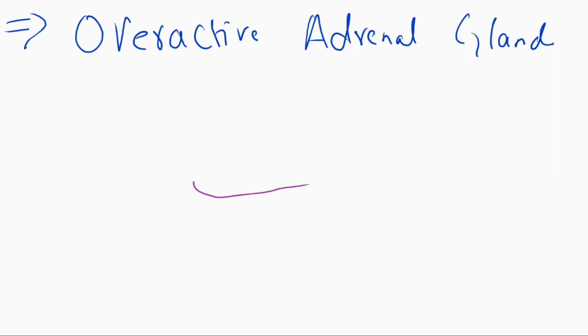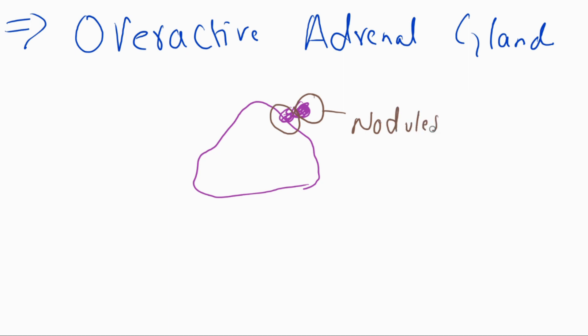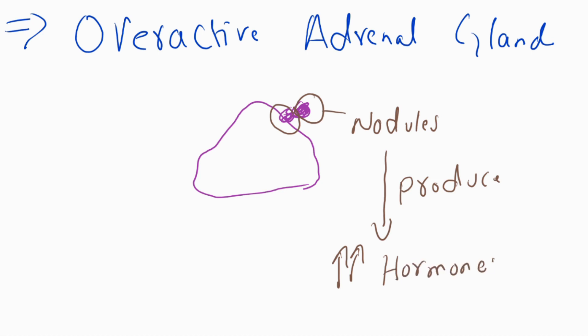The next disorder of the adrenal gland is overactive adrenal gland. In this condition, the adrenal gland develops nodules. These nodules result in high production of hormones, causing the adrenal gland to be overactive or hyperactive, resulting in a disease condition.